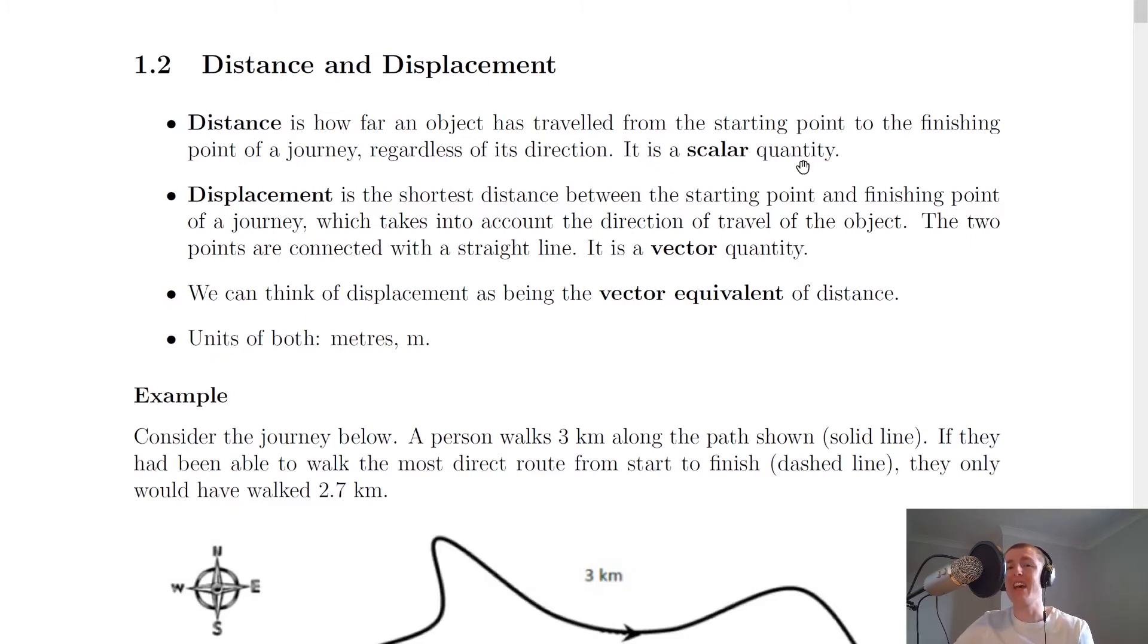So displacement, on the other hand, is the shortest distance between the starting point and finishing point of a journey which takes into account the direction of travel of the object. So we do care about direction for displacement because remember it's a vector quantity. And often we can say the two points are connected with a straight line.